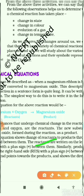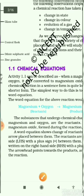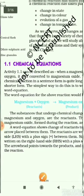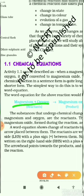In the second paragraph, they want to explain about the reactants and the products. Magnesium plus oxygen are your reactants. Oxygen and magnesium are written on the left-hand side. Those substances which are written on the left-hand side are called the reactants.